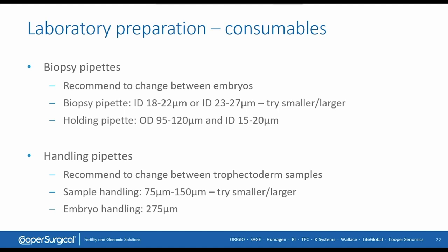We need high quality biopsy pipettes and handling pipettes. We recommend changing biopsy pipettes between embryos to avoid contamination with foreign DNA. The biopsy pipette diameter ranges from 18 to 22 or 23 to 27 micrometers — try smaller and larger to find what works best for you. If you use too large a biopsy pipette, you will aspirate too many cells, making it more difficult to remove them from the embryo. The holding pipette is like the standard holding pipette used for ICSI. The key is that with these pipettes you have excellent control of the cells.